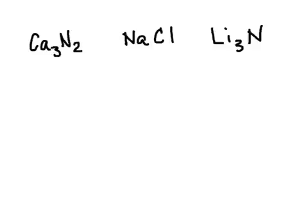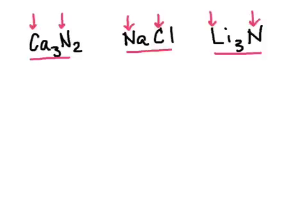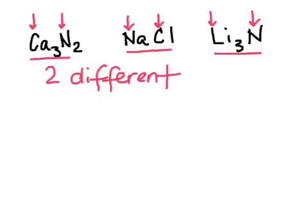Before we move on to writing chemical formulas for ionic compounds, I want to see if you've noticed a pattern. Here are three ionic compounds we've looked at — pause and see if you can spot a pattern. In each compound, we have two capitals. That's important because every atom in a compound begins with a capital, since all symbols on the periodic table start with a capital. So each of these has two different types of atoms — and that's going to be important when we come back to polyatomic compounds or compounds containing polyatomic ions.